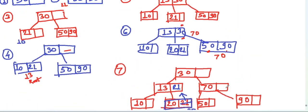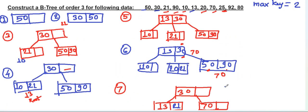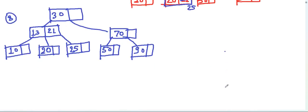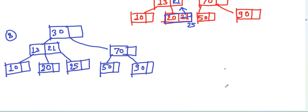Next, add 92. Since 92 goes to the right of 90, and there is a space in that node, 90 and 92 are placed together.